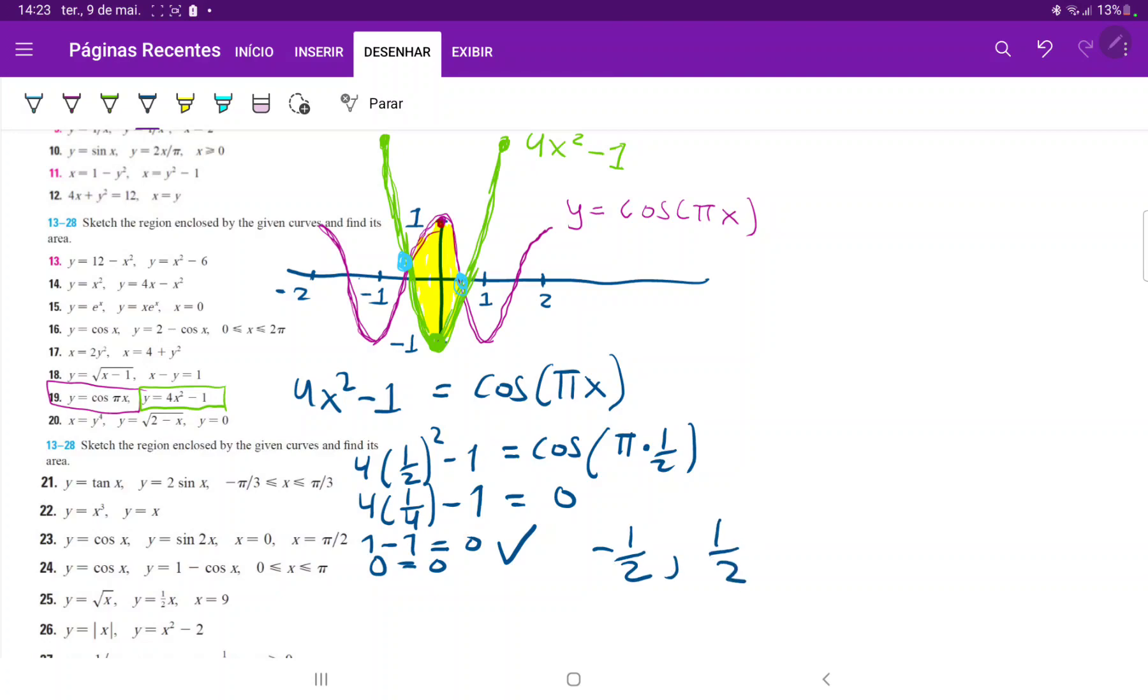These two are symmetric. The left hand side has the same area as the right hand side. We know it is symmetric because both the cosine is symmetric with respect to the y-axis and the parabola is also symmetric with respect to the y-axis. The line at x equals zero is an axis of symmetry for both.